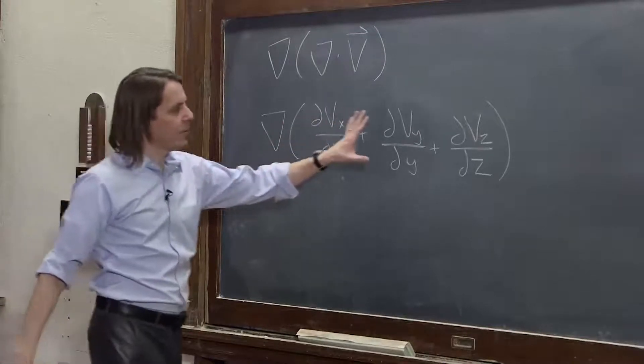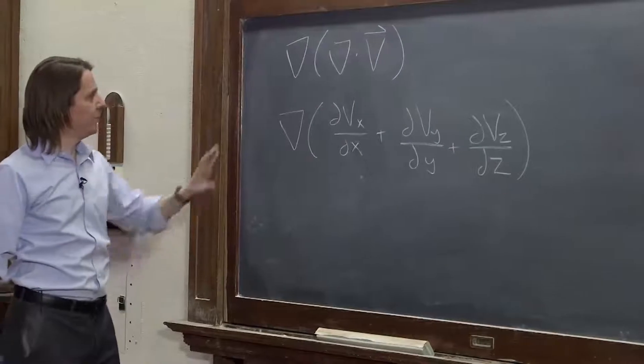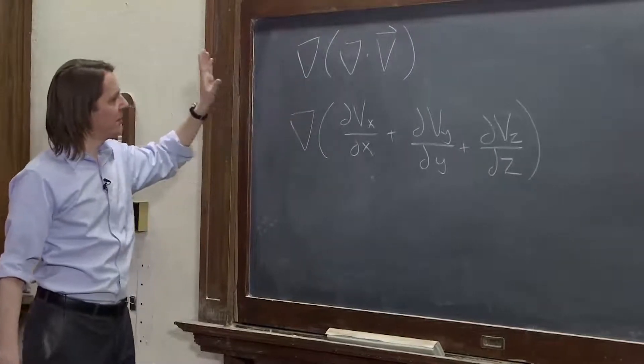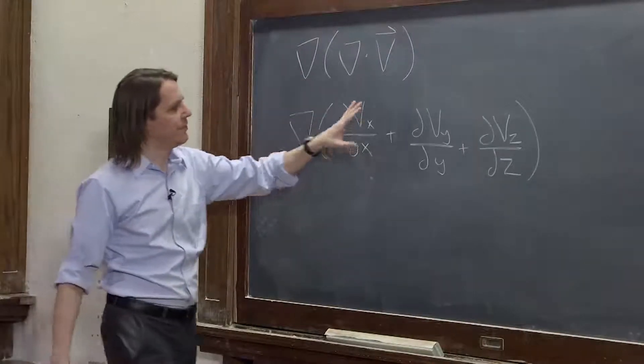The divergence is a scalar, just like it should be. So there we go. And that's from taking the dot product of ddx, ddy, ddz, and vx, vy, vz.